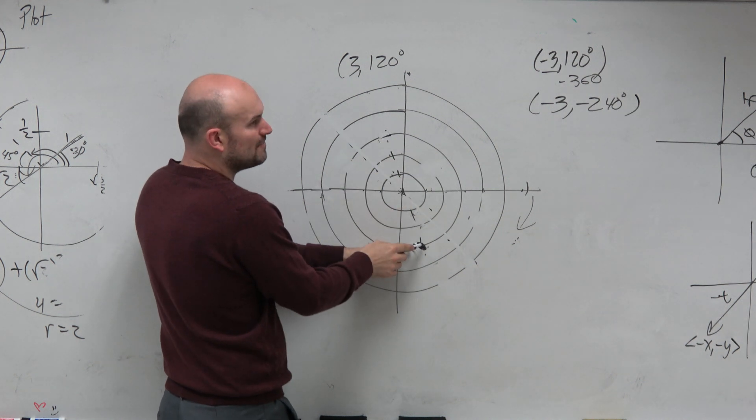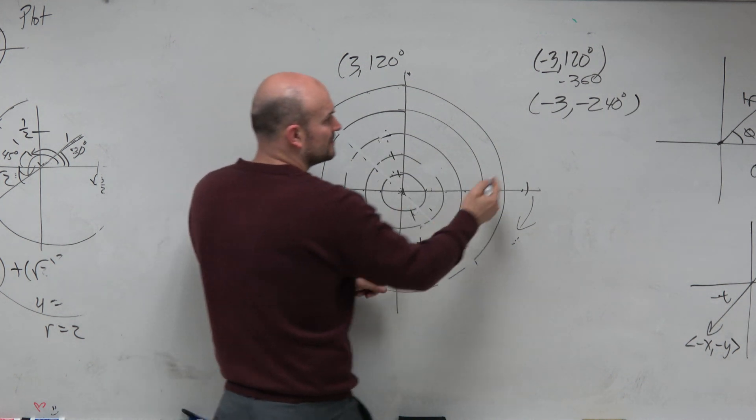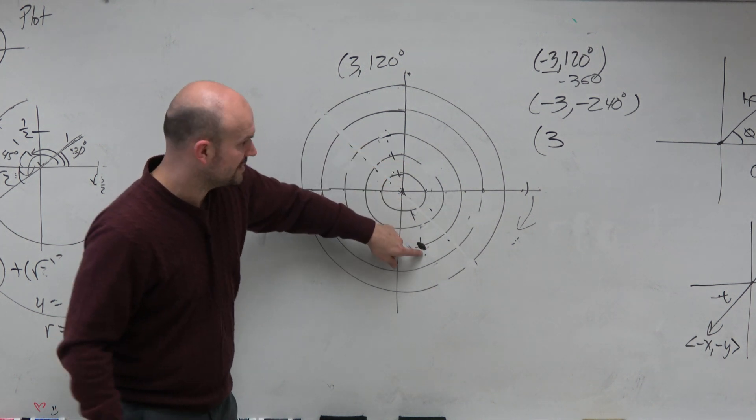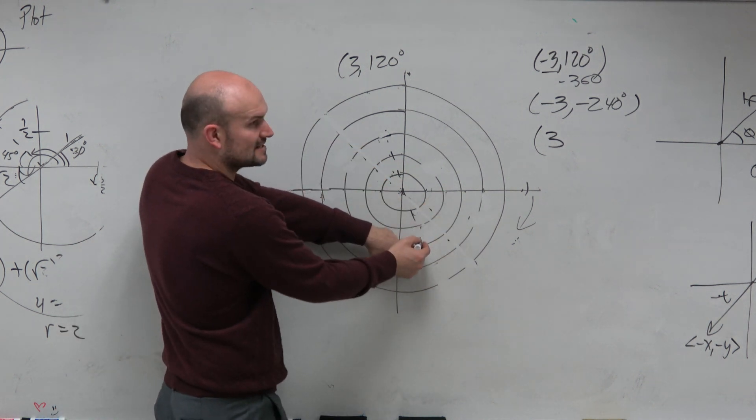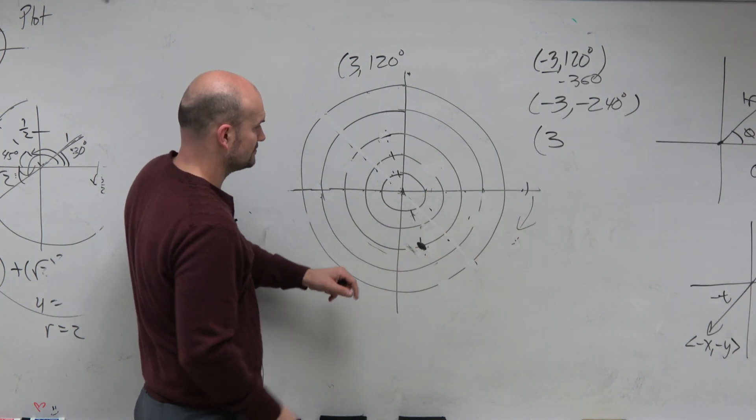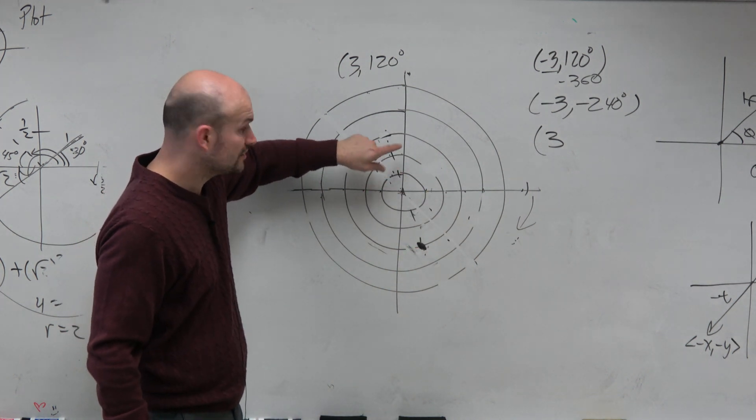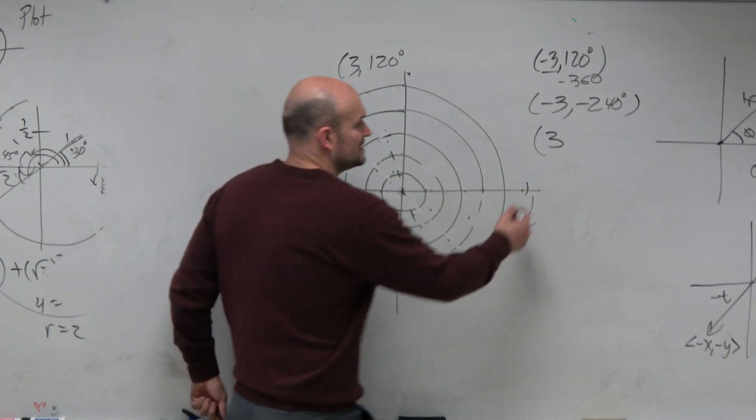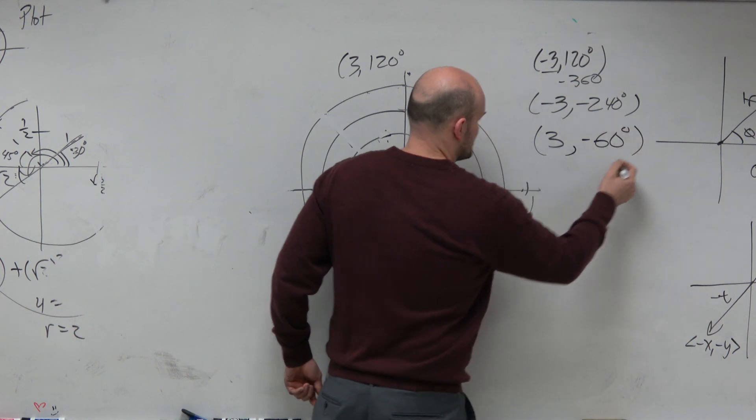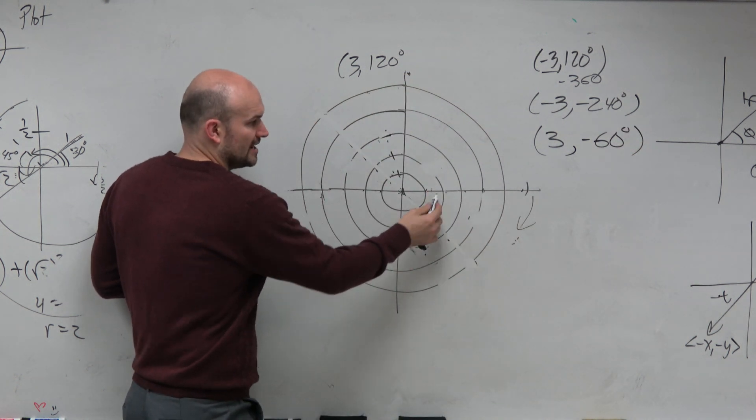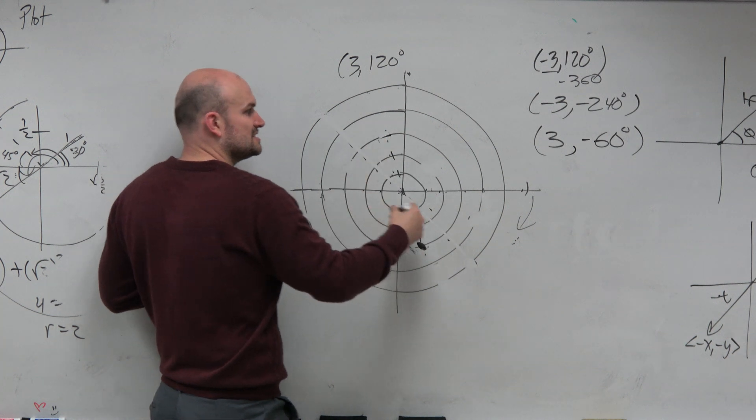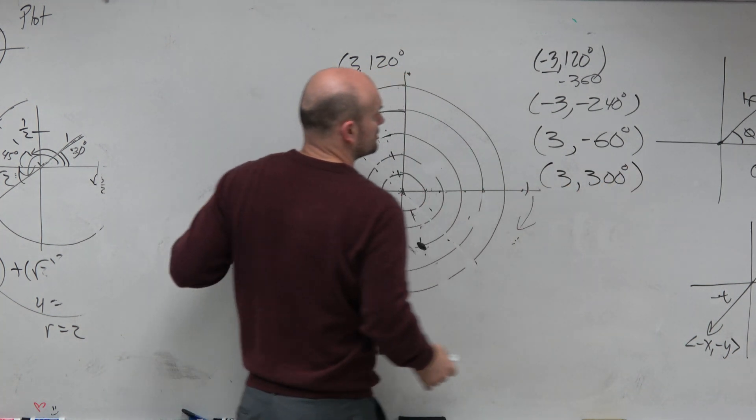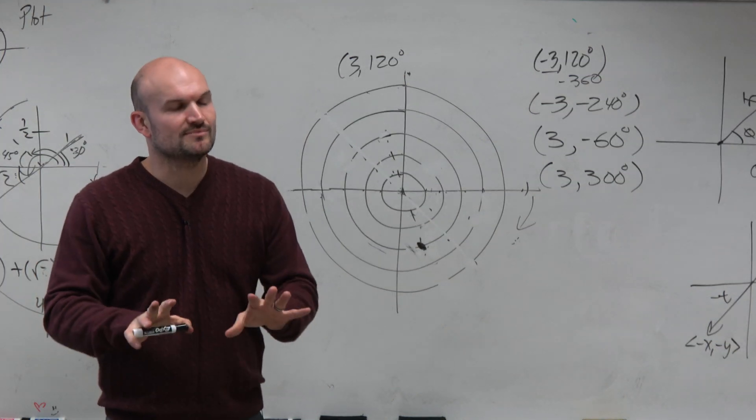But why don't we use the positive ratio? Why don't we use the positive direction? So here's my points. You just use a positive 3. How far is this away from the x-axis? Yeah, 60. The reference angle of 120 is 60. So that means the reference angle here is 60. So that means it's a negative angle, 60 degrees. Right? From there to there, it's 60 degrees. Or you could do the positive distance, which would be 300.